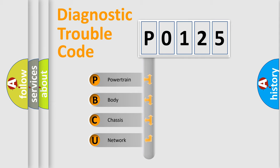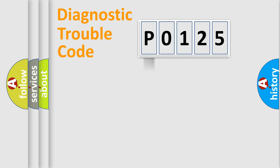We divide the electric system of automobile into four basic units: Powertrain, Body, Chassis, and Network. This distribution is defined in the first character code.